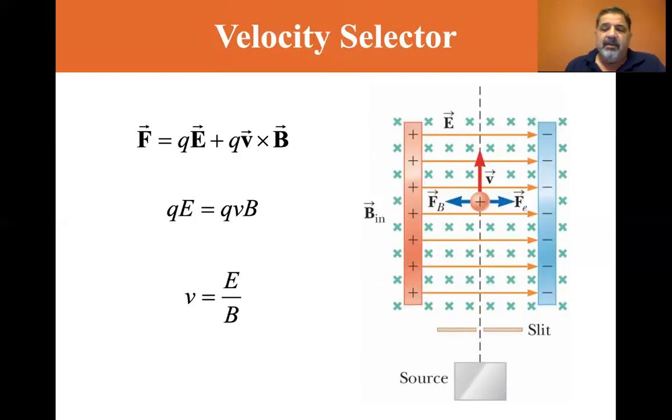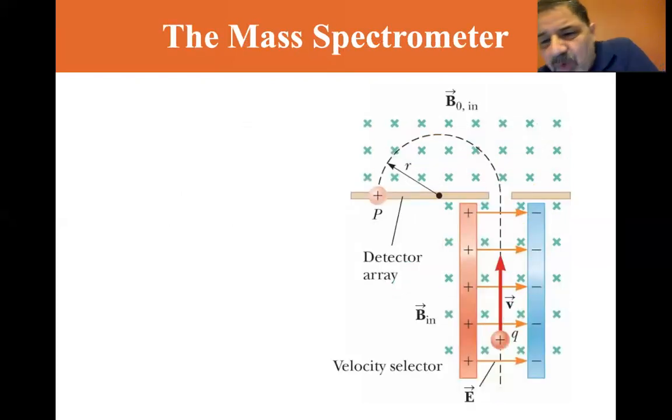So the velocity has to be going right. If it's not going fast enough, it'll be deflected by the electric field. If it's going just at the right velocity, it'll go straight through. Okay. Then we have a mass spectrometer. And the first part of the mass spectrometer is a velocity selector.